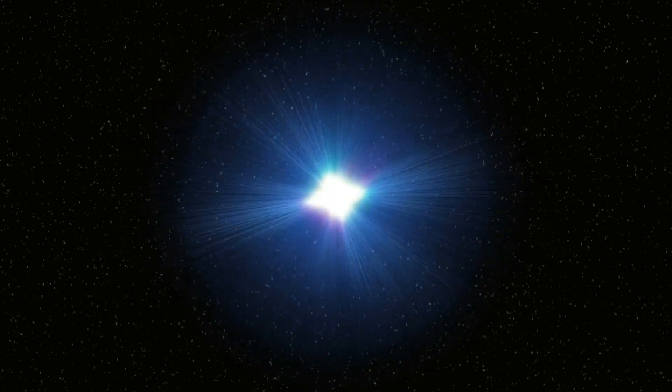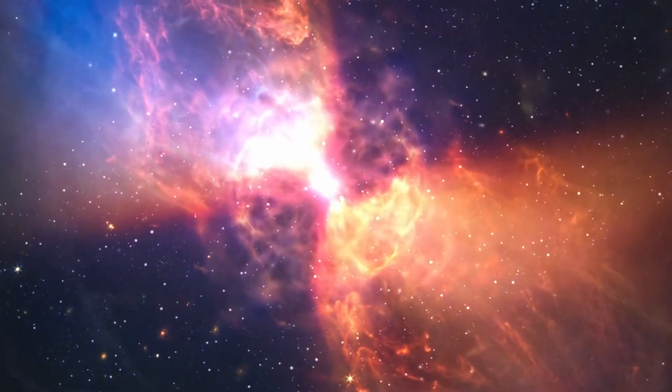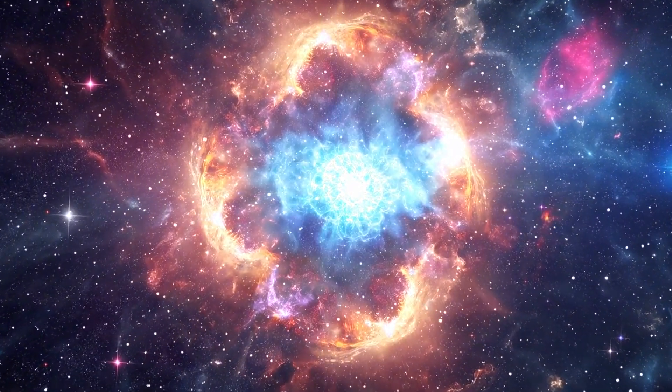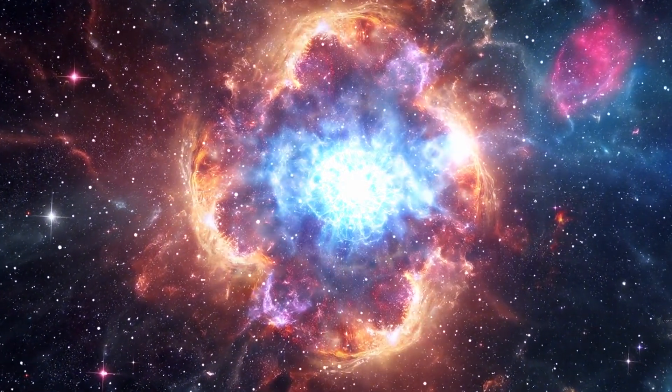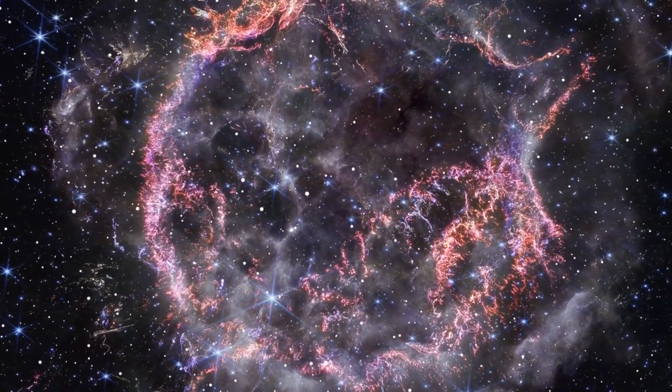To fully grasp what happens post-supernova, it's crucial to understand the supernova itself. When a massive star like Betelgeuse exhausts its nuclear fuel, it undergoes a dramatic collapse. The core, no longer supported by nuclear reactions, implodes under its own gravity, leading to a catastrophic explosion. This explosion, known as a supernova, disperses the star's outer layers into space at incredible speeds, creating a dazzling display that can briefly outshine an entire galaxy. The supernova also disperses heavy elements, such as iron, nickel, and other metals, into the interstellar medium, enriching the cosmos with the building blocks for future stars and planetary systems.